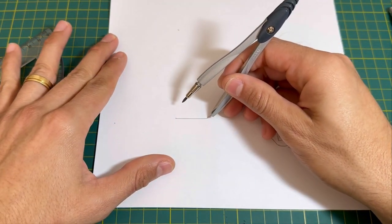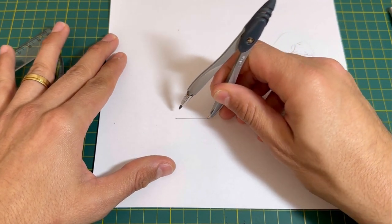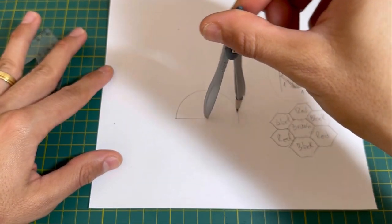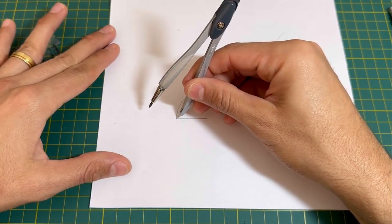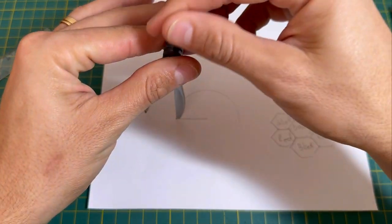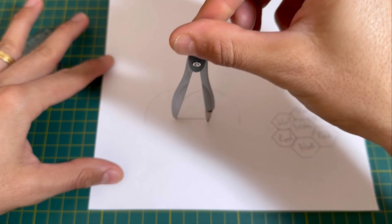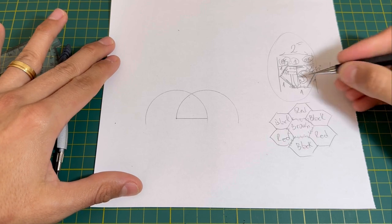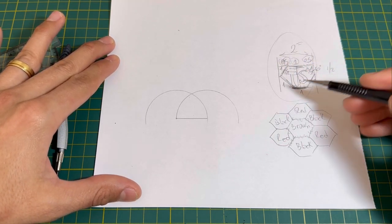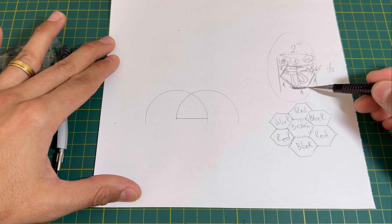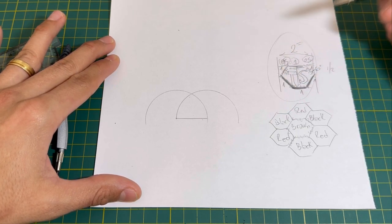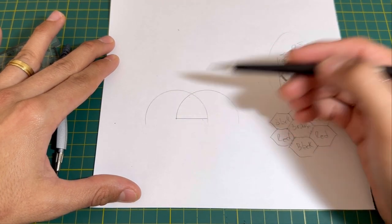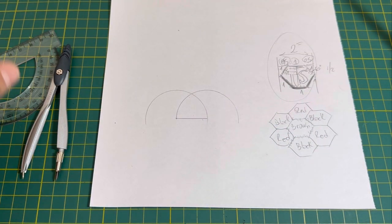You start on one of the edges, the points, and you draw a semicircle. You go to the other side and you do exactly the same. Now you know that this is the first side we drew. These sides are going to end somewhere along these curves. Where exactly is what we need to decide.